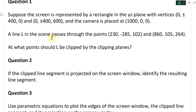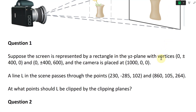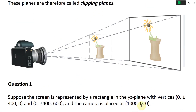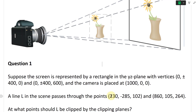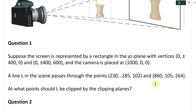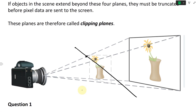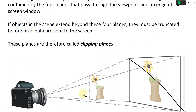Question 1: Suppose the screen is represented by a rectangle in the YZ plane with vertices (0, ±400, 0) and (0, ±400, 600), and the camera is placed at (1000, 0, 0) — so the camera is 1000 units from the screen. A line L in the scene passes through the points (230, −285, 102) and (860, 105, 264). We're asked at what points should the line be clipped by the clipping planes. You basically have a line and need to find where you're cutting it off.